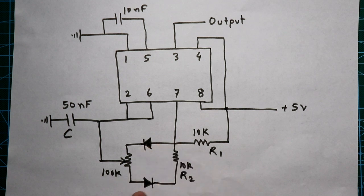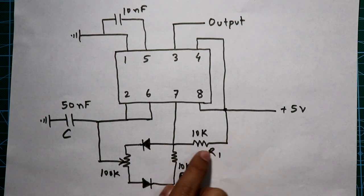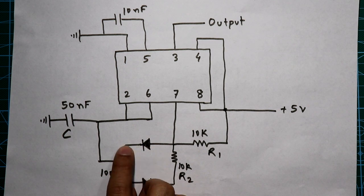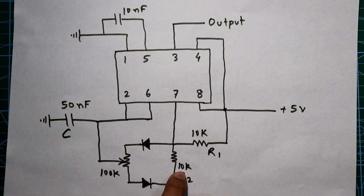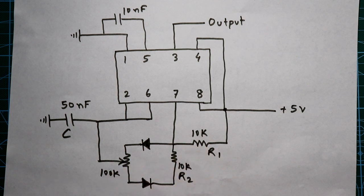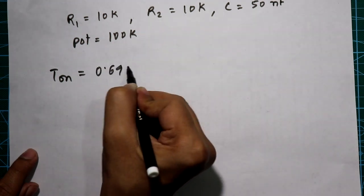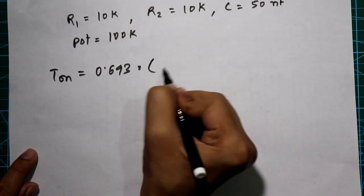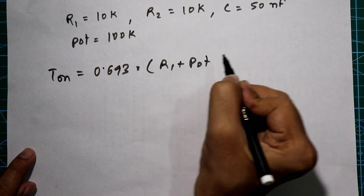There will not be any current flow through the other path because this side is cathode and this side is anode. Current will flow through this diode and through the potentiometer. For the calculation, we will consider the potentiometer instead of R2. Current is flowing only through R1 and the potentiometer. As we know, T-on = 0.693 × (R1 + potentiometer) × C.